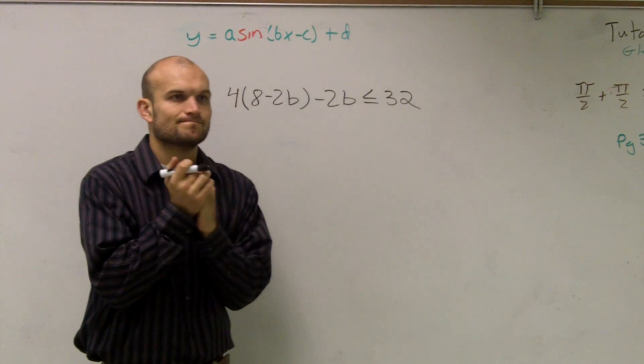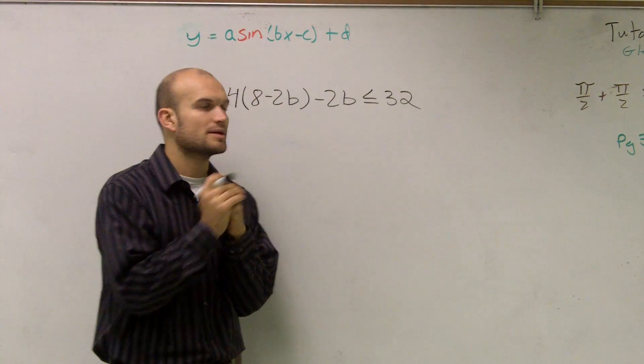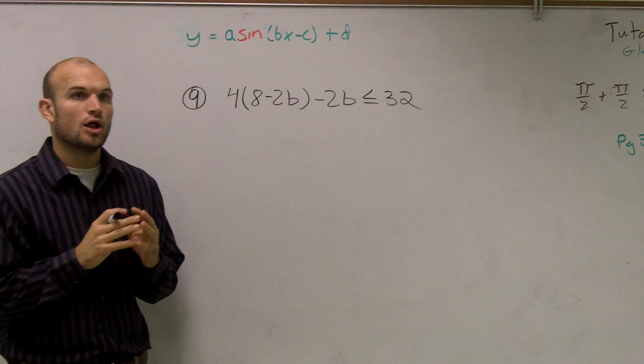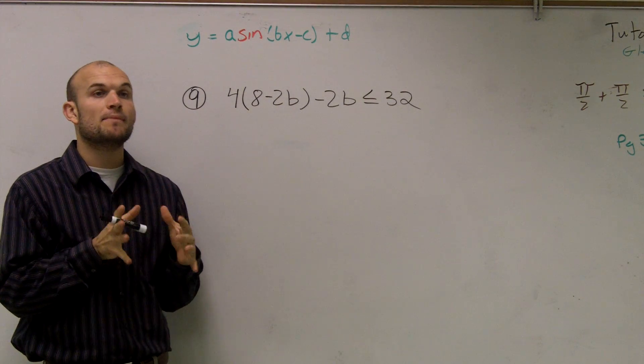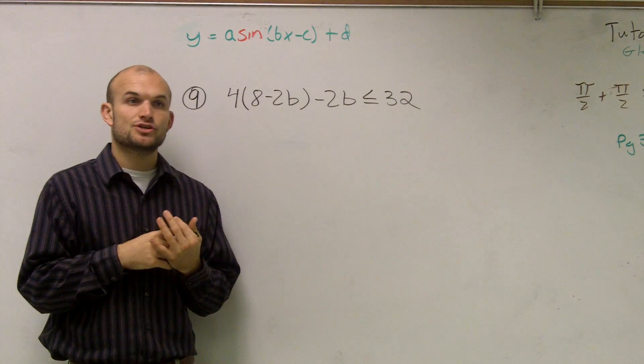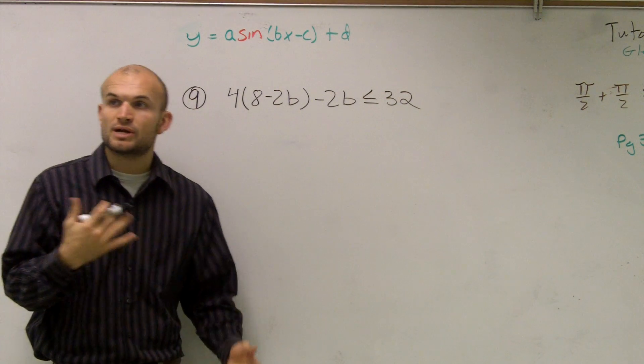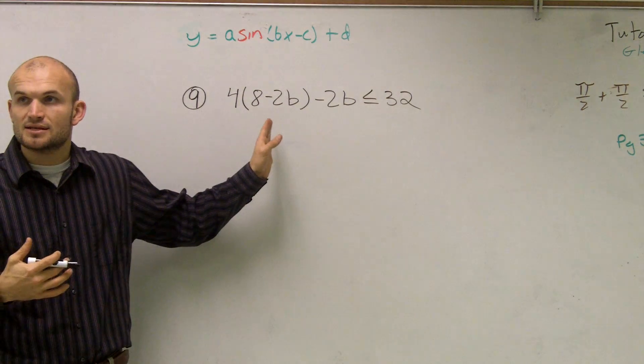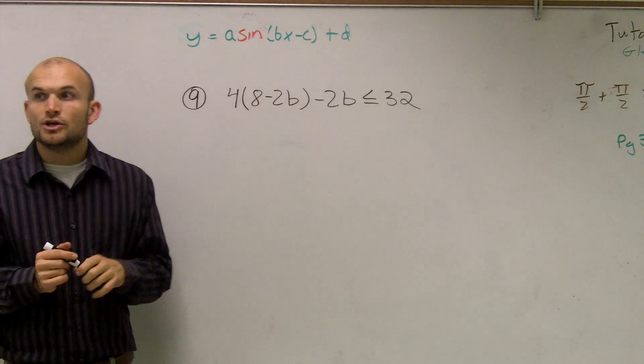So here we go. To solve this problem, when you're solving a multi-step inequality, you want to make sure that you remember the distributive property. Whenever you have a number outside your parentheses and it's being multiplied by your parentheses, you need to make sure that your number is multiplying every term inside your parentheses.